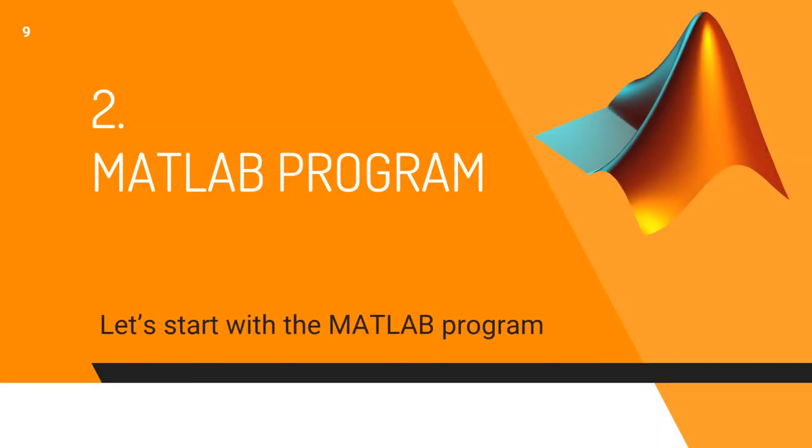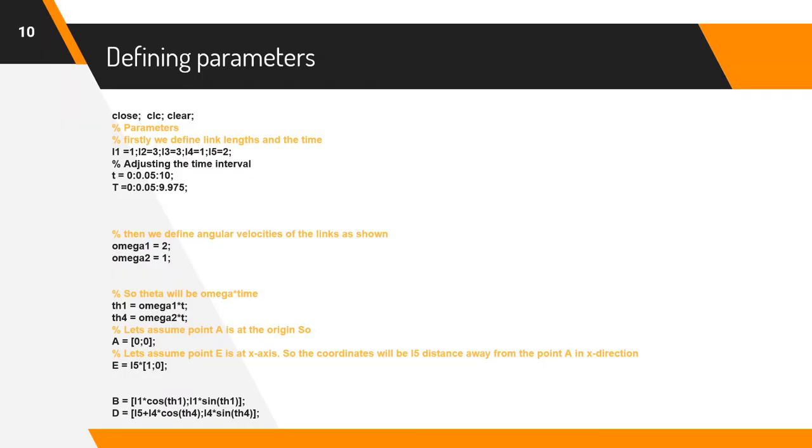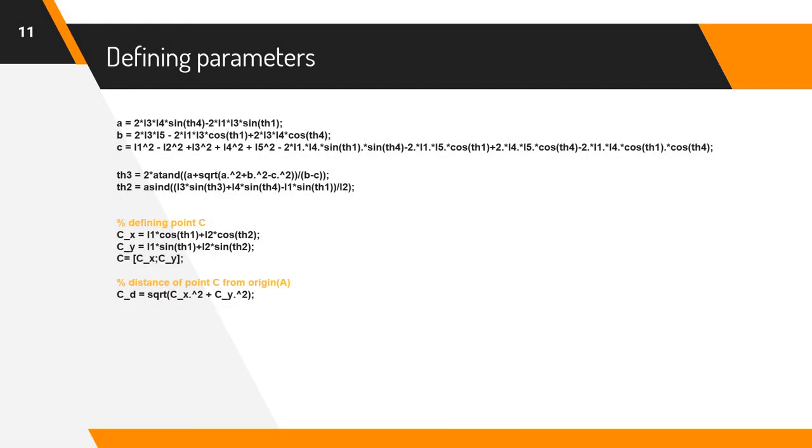Let's start with the MATLAB program. Firstly, we define variables for link length and time. Then we define angular velocities omega 1 and omega 2. After that, we define the points A, E, B and D. Now we define theta 3, theta 2 and point C as we have calculated. The distance of point C from the origin can be calculated using distance formula.